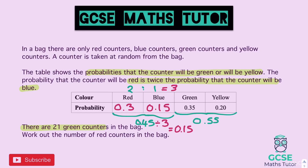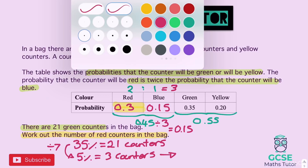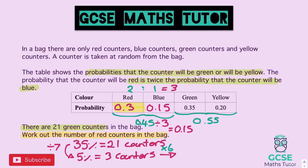The table tells us green is 0.35, or 35%, and there are 21 green counters. So 35% = 21 counters. Rather than dividing by 35 to get 1%, it's easier to divide by 7: 21 ÷ 7 = 3, so 5% = 3 counters. Red is 30%, and we can get from 5% to 30% by multiplying by 6.